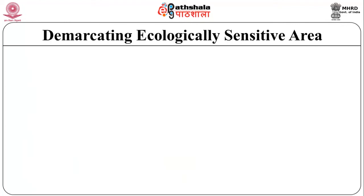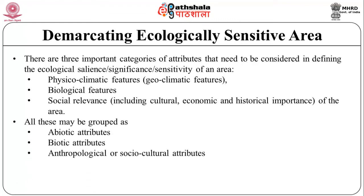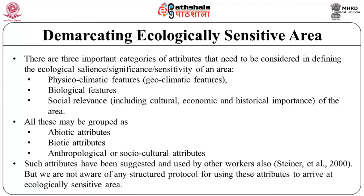We now move on to understanding the demarcation of ecologically sensitive areas. There are three important attributes that need to be considered in defining ecological salience, significance and sensitivity of an area. The first is the physioclimatic or geoclimatic feature; the second is the biological feature; and the third is social relevance including cultural, economic and historical importance. All these may be grouped as abiotic features, biotic features, and anthropological or socio-cultural attributes. Such attributes have been suggested and used by other workers, but no structured protocol for using these attributes to arrive at an ecologically sensitive area has been established.